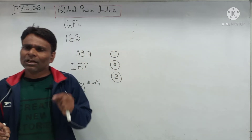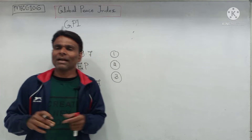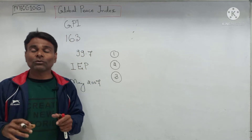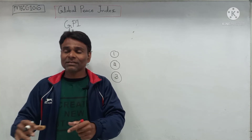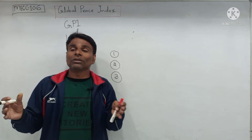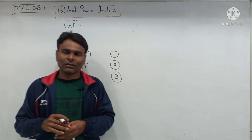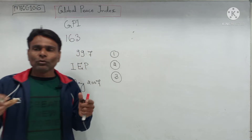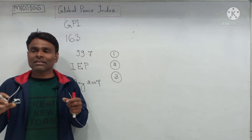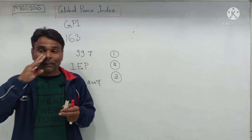The GPI measures the extent to which a particular nation is involved in domestic and international conflict. It also measures the level of harmony or discord within a nation, including lower crime rates, minimum levels of terrorist attacks, and violent demonstrations.